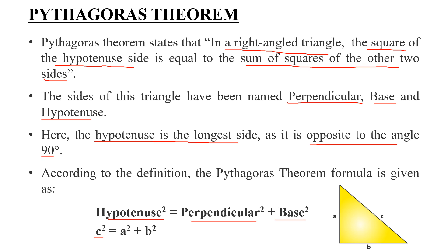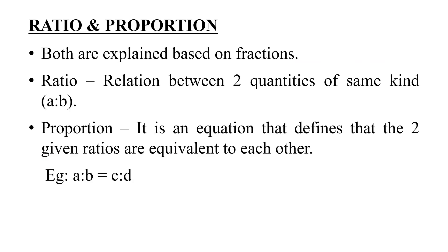Perpendicular is A, and B is the sign of B. In this formula, c² is equal to a² plus b². You can learn these problems. Next, we have to look at ratios and proportions.